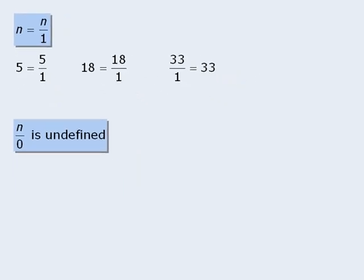Another way to look at this is to consider the following example. When we take 6 and divide it by 2 we get 3. This also means that when we multiply 3 by 2 we get back to 6. So if we want 6 over 0 to have some value, then it must also be the case that when we multiply that value by 0 we get back to 6. Since it is impossible to have such a number, we simply say that any number n over 0 is undefined.